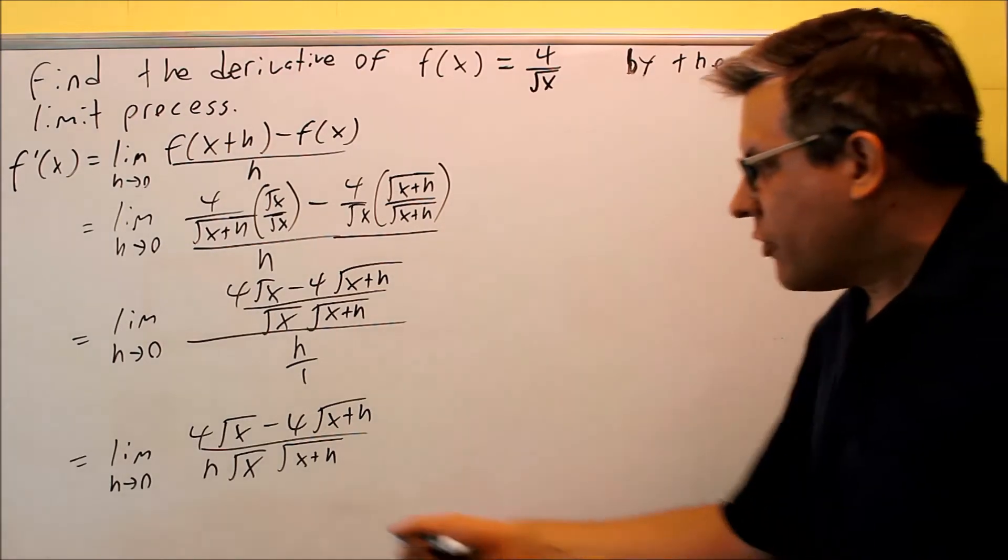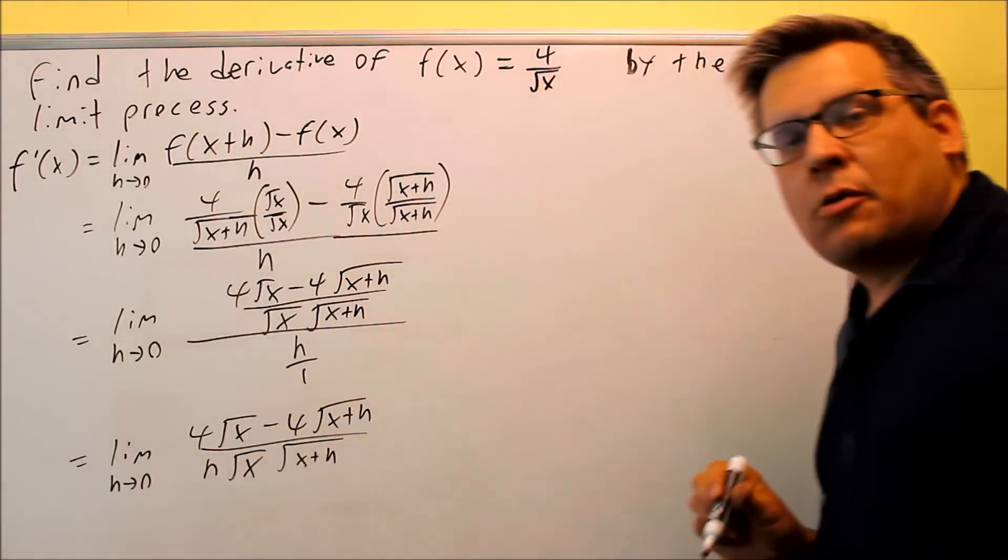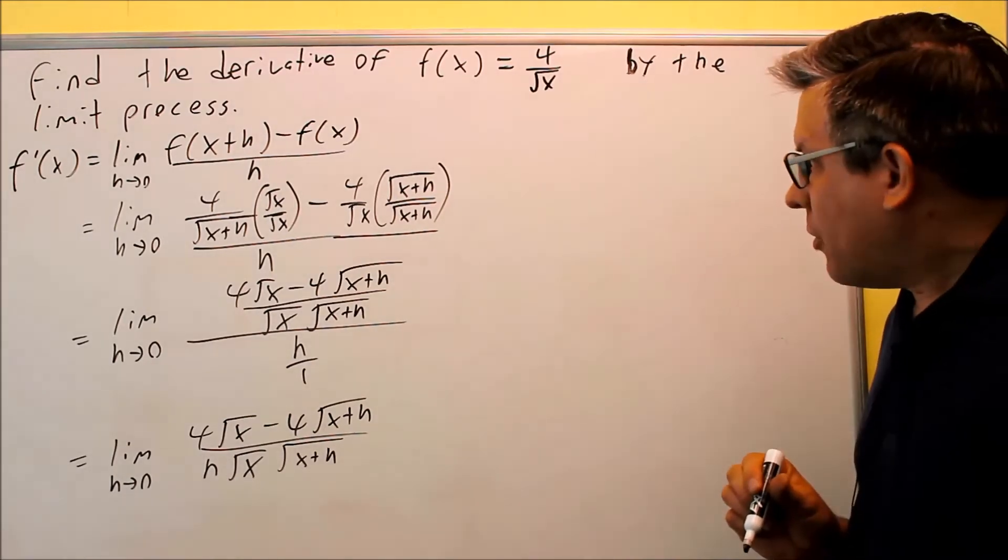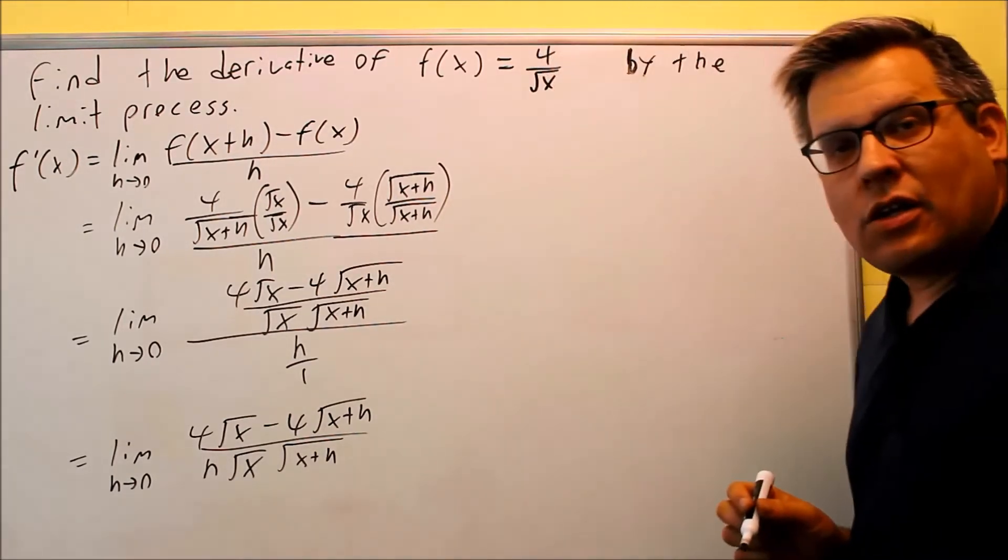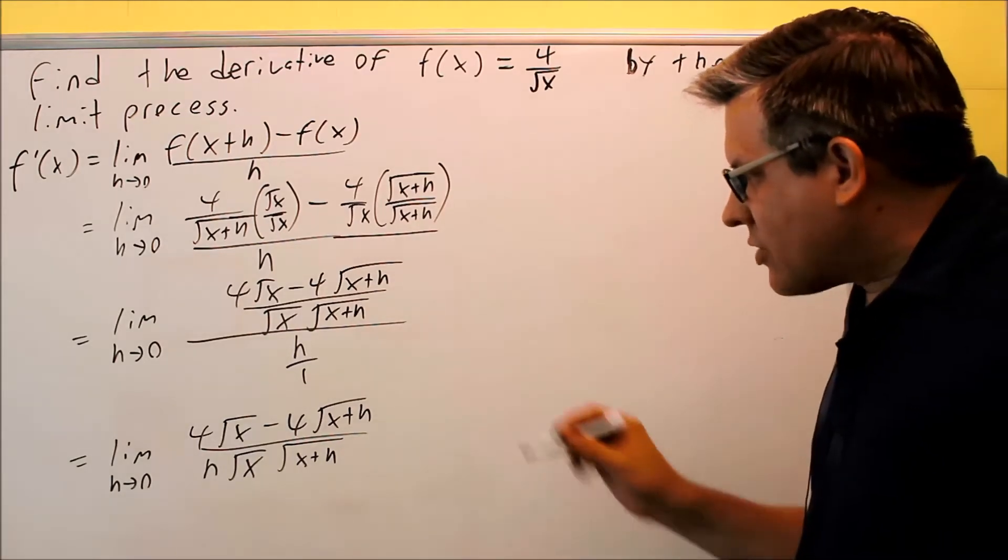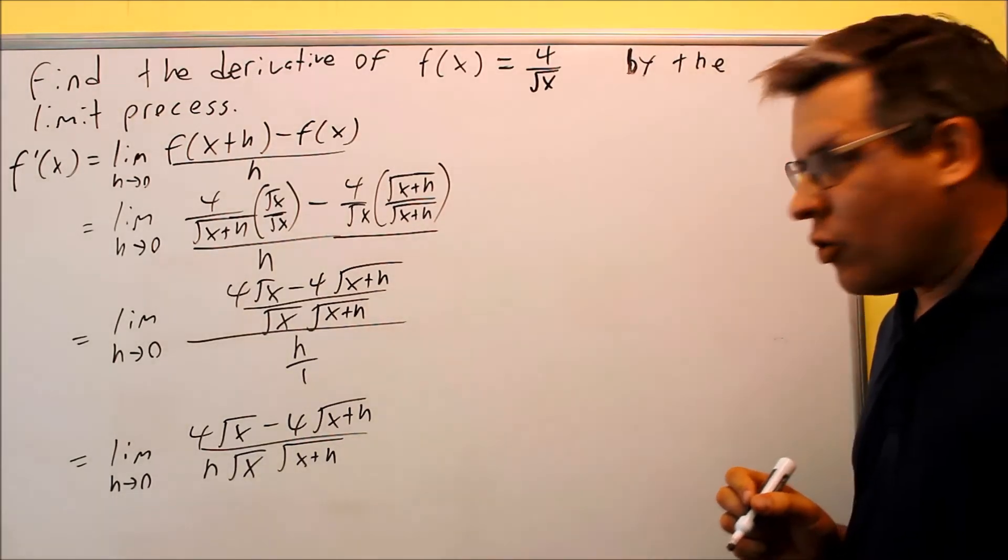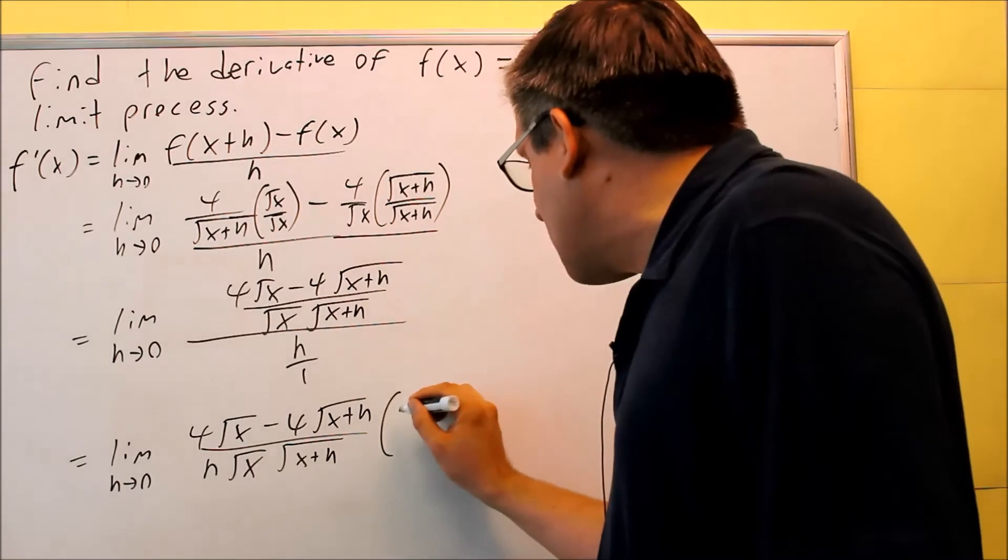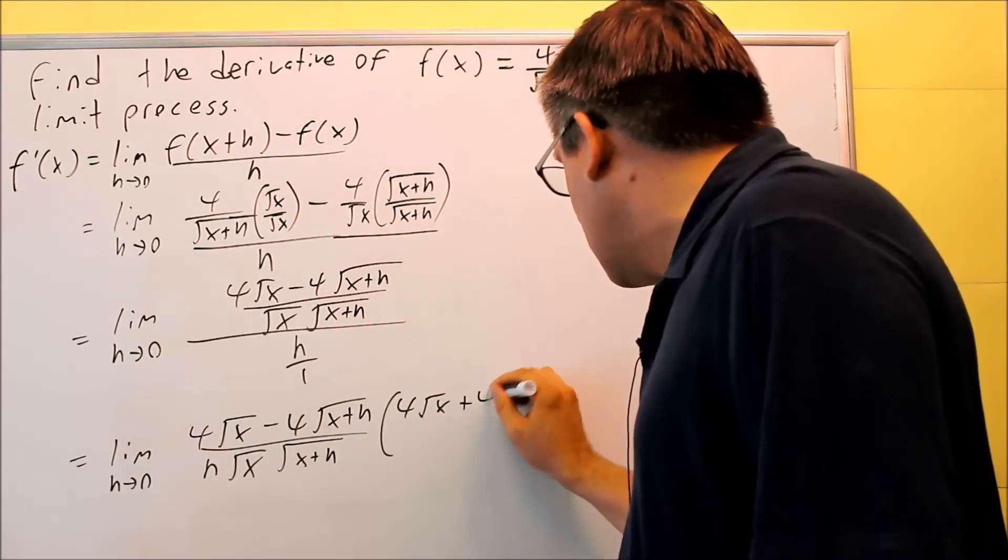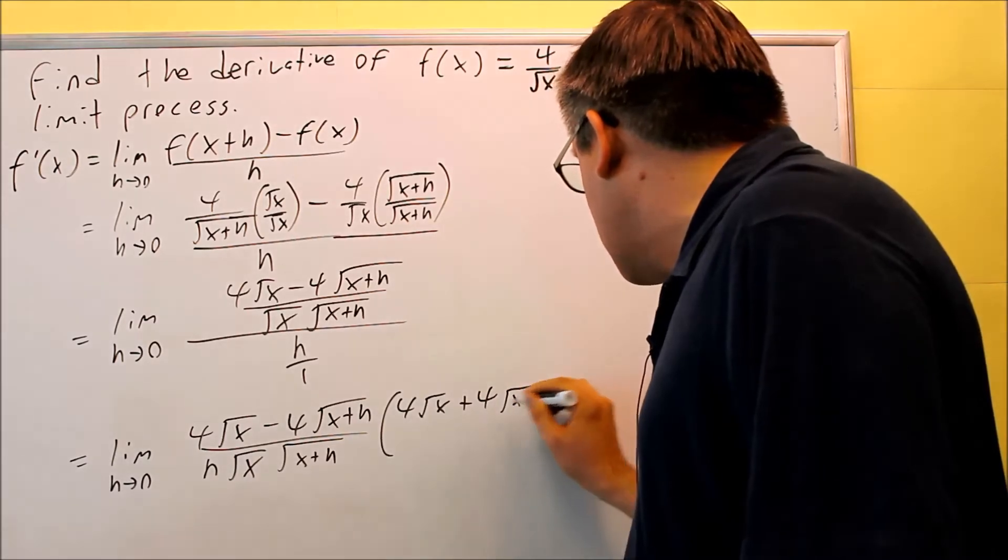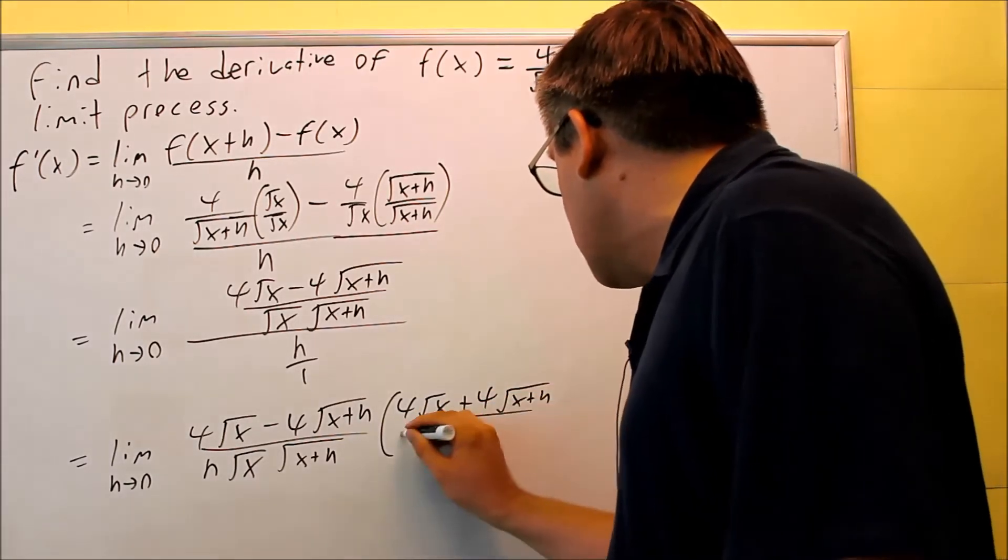Now unfortunately, if I try and take the derivative right now and put a 0 in, I'm going to be getting division by 0 happening. So what I'll do instead is I need to multiply this out by the conjugate, that's that process we talked about with limits, in order to do that. So I'm going to multiply this by 4 square root of x plus 4 square root of x+h. I've got to do the opposite sign, so I've got to do a plus.